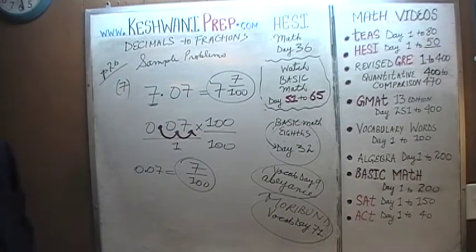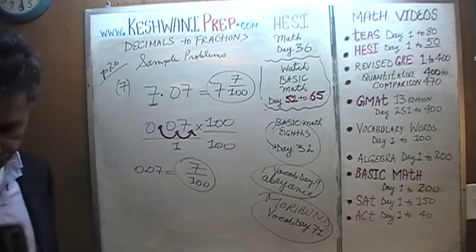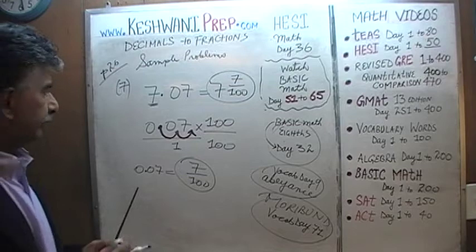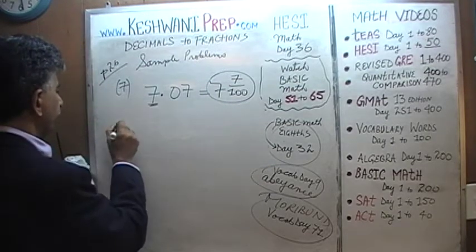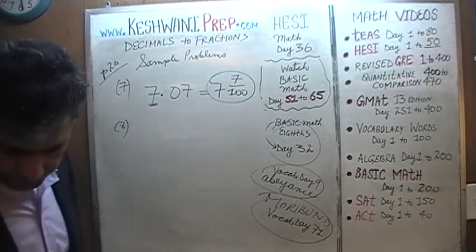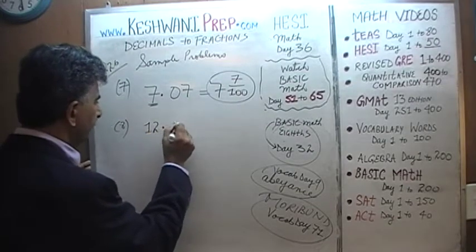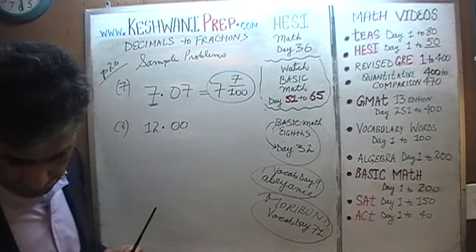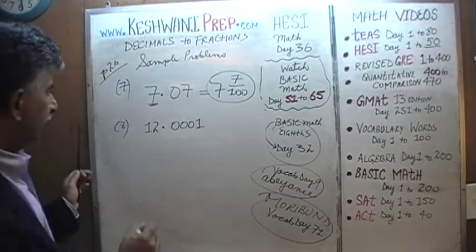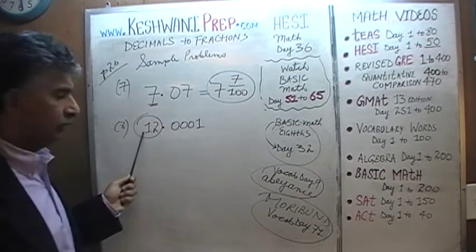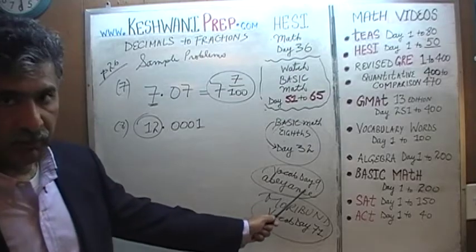Number 8 — or number 8 rather. Question number 8. We have 12.001. Again, we're going to leave our 12 in abeyance — we're going to deal with it later.